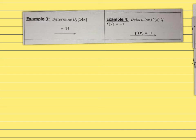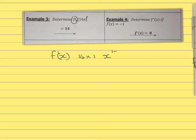Example 3: determine dx where the expression is 14x to the power 1. We know this is of the form ax, so it's 14 times 1, x to the power 1 minus 1. That gives 14 times x to the power 0, which is 1. So 14 times 1 equals 14. The answer is 14.